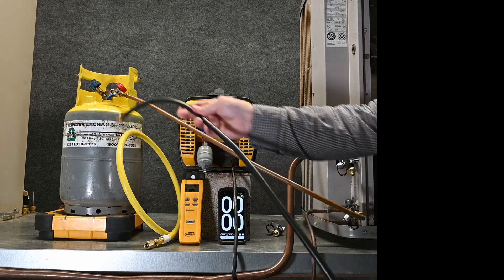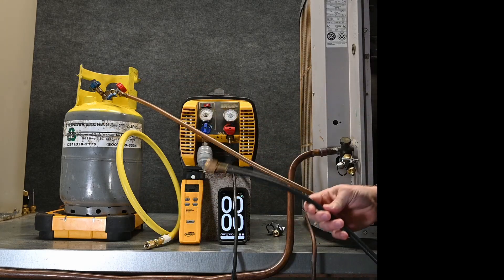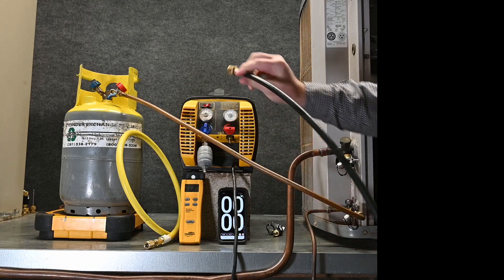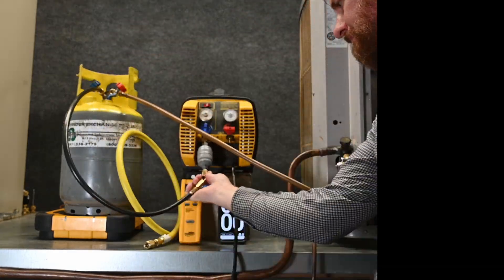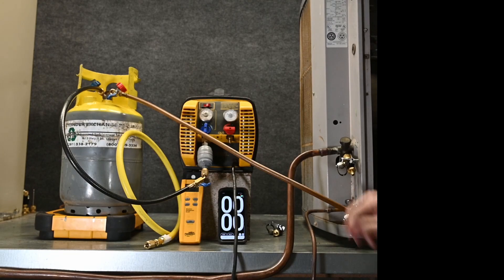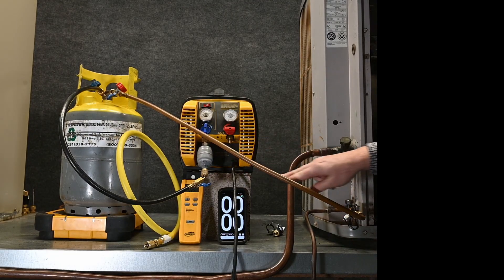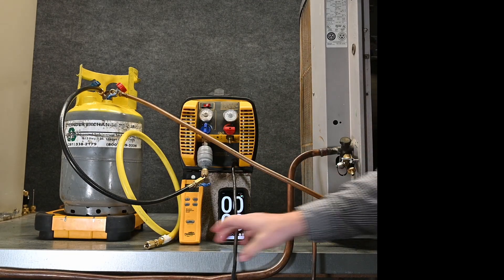So what I'm going to do is hook a hose from the vapor side of my recovery tank to the inlet of my recovery machine. Then I'm going to hook a hose from the output of my recovery machine to the vapor side of my refrigeration system.